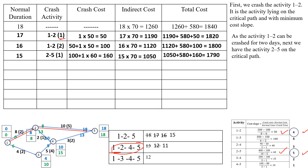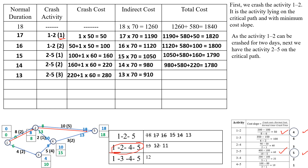Crash activity 2-5 for another day; duration becomes 14 days. Crashing cost is 160 plus 1 into 60, which is 220. Indirect cost is 14 into 70, which is 980. Total cost is 980 plus 580 plus 220, which is 1,780 rupees. Crash activity 2-5 for a third day; duration becomes 13 days. Crashing cost is 220 plus 60, which is 280. Indirect cost is 13 into 70, which is 910. Total cost is 910 plus 580 plus 280, which is 1,770 rupees.